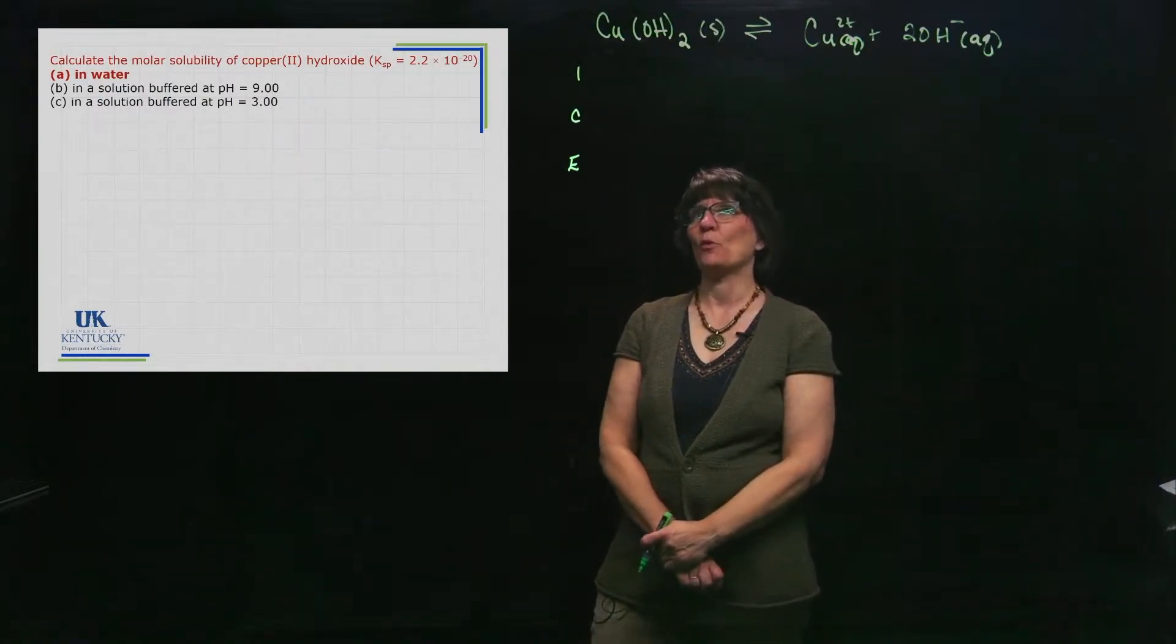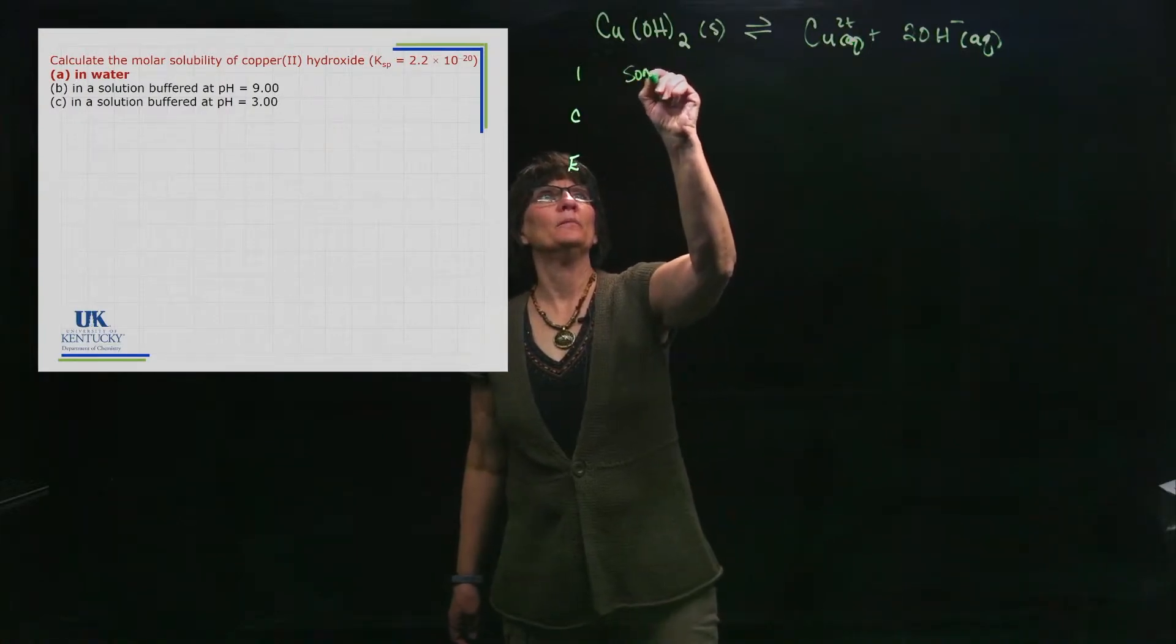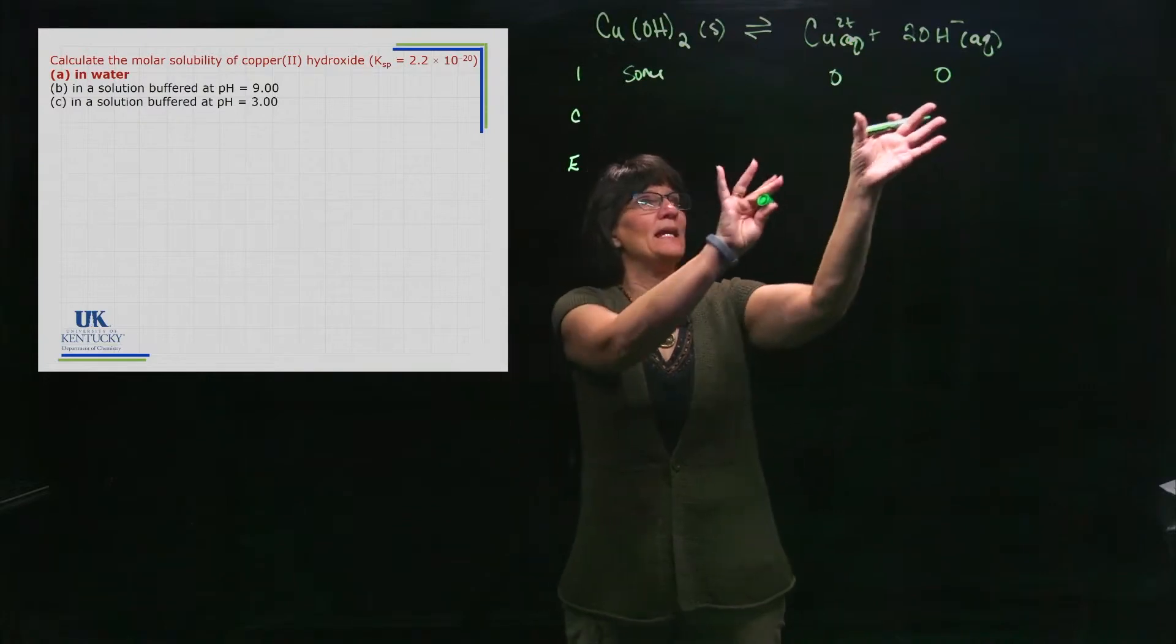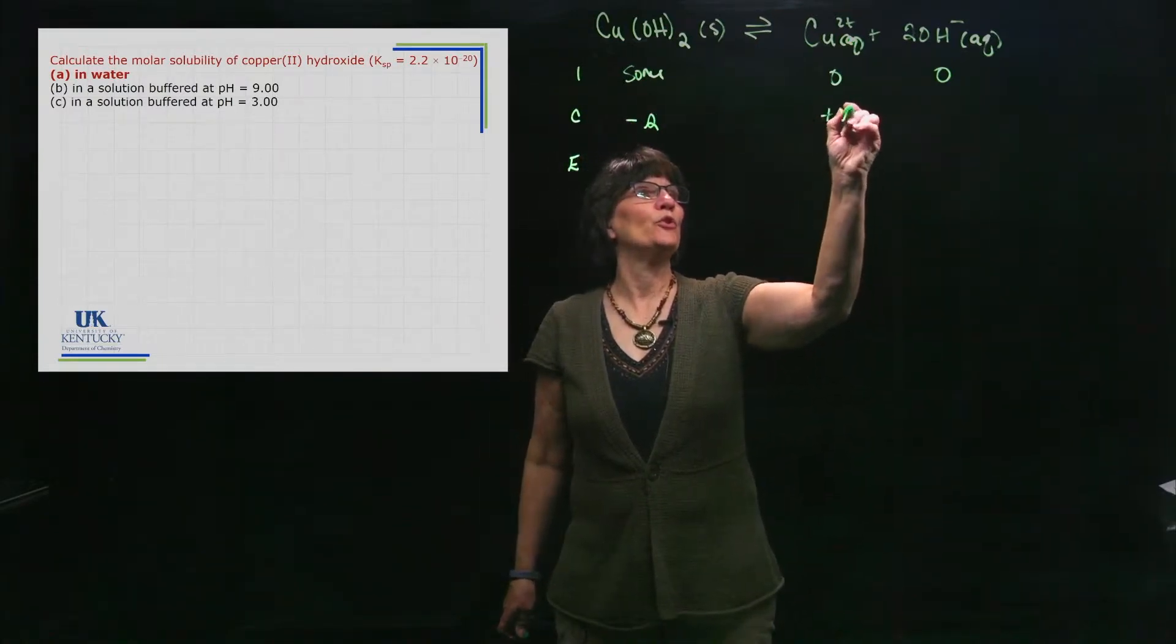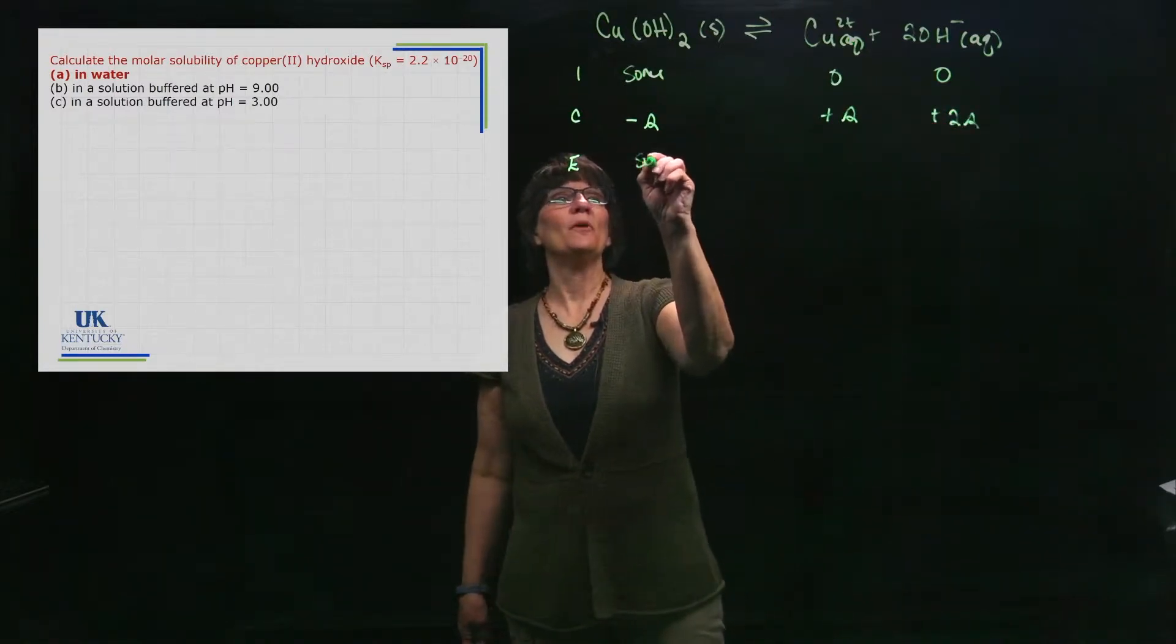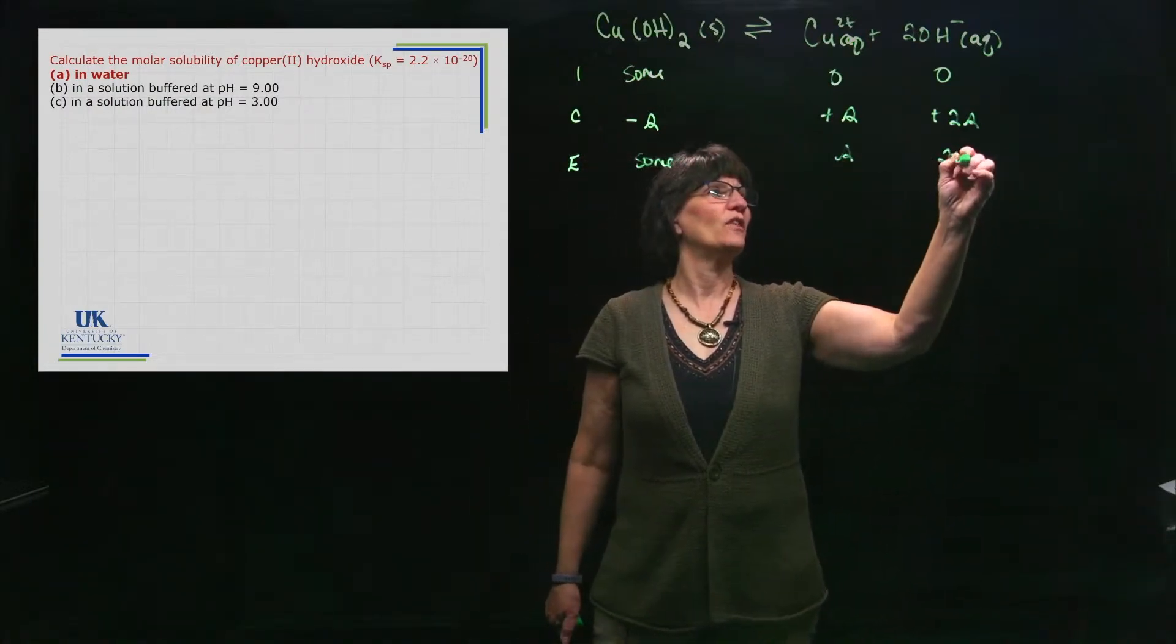Let's treat it as if it were a straightforward problem. In a straightforward problem, we would put some here, we put zero here and zero here, saying we haven't made any of this yet. We dissolve some, we produce an s here, we produce a 2s there. So this gives me some of this, s of this, and 2s of this.